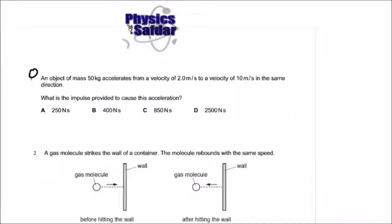This is question number one. An object of mass 50 kilograms accelerates from a velocity of 2 meters per second to a velocity of 10 meters per second in the same direction. What is the impulse provided to cause this acceleration? We have four options.